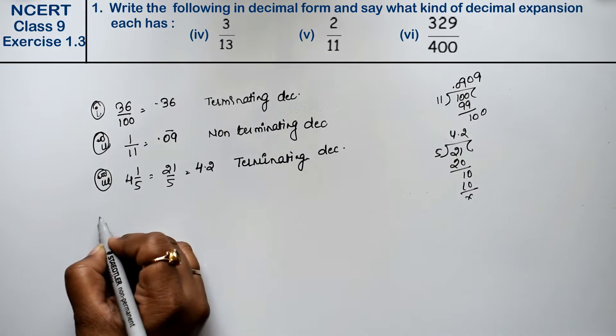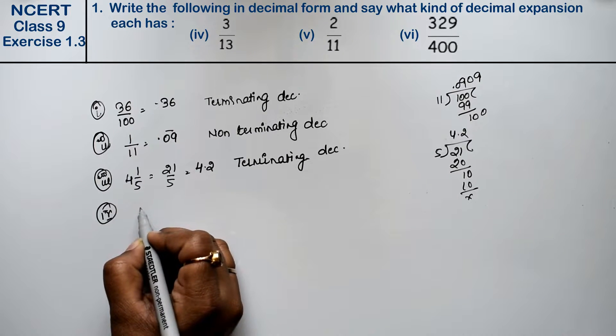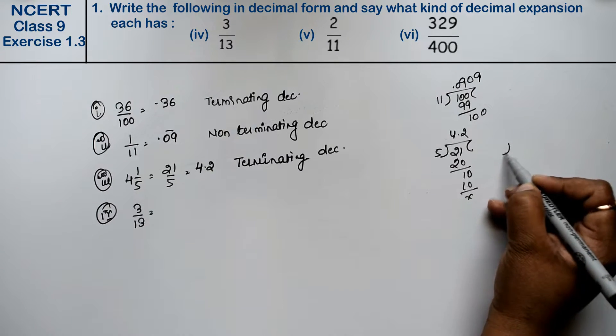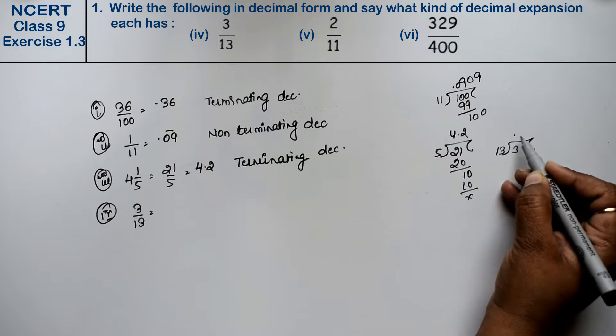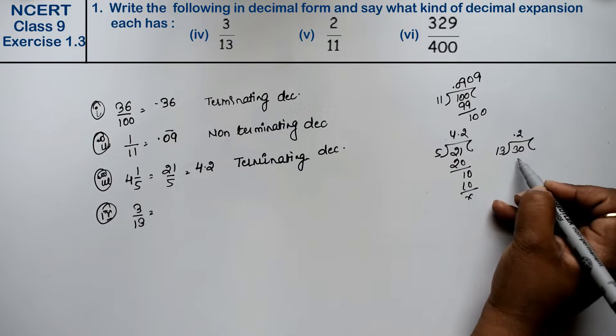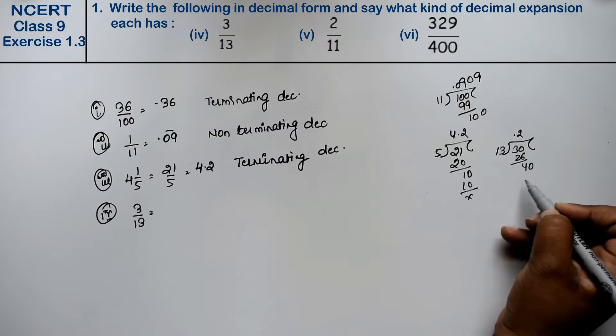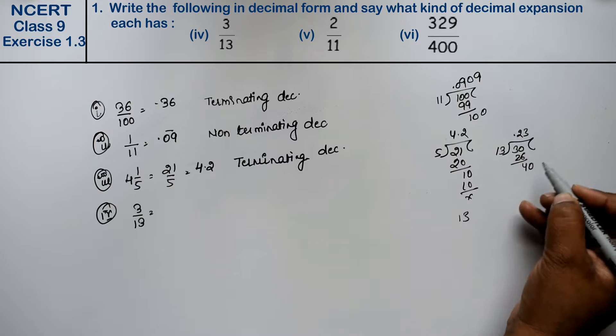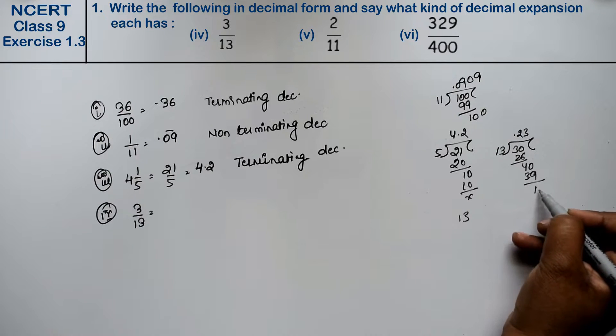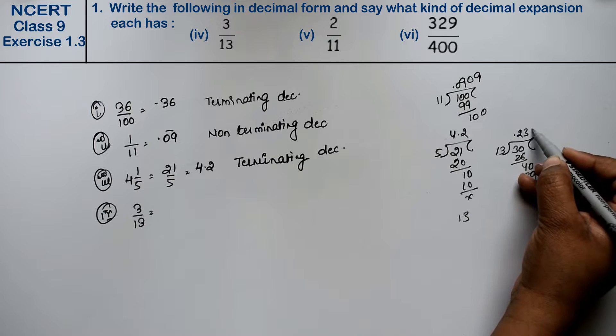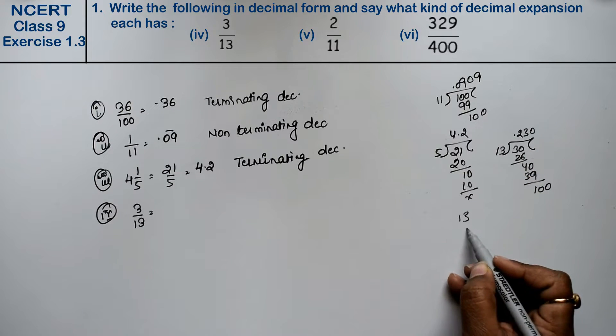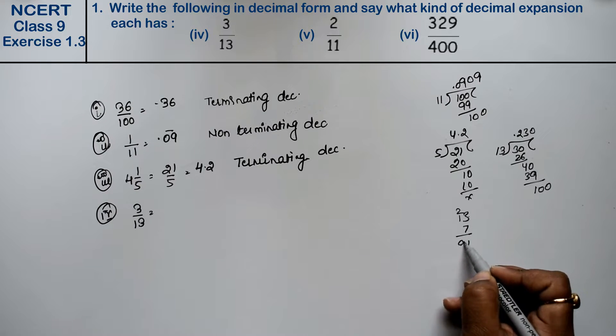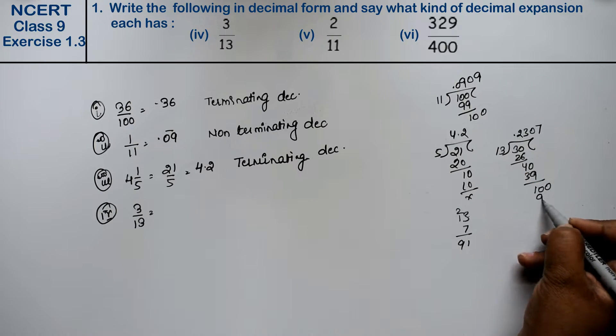Right friends. Let's do fourth part. Fourth part is 3 upon 13. Divide, we will write 13 from 3. Point, 0 is 0, is 26, is 40, is 13, 3 is 39, is 10.